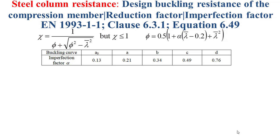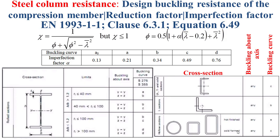The imperfection factor alpha is determined depending on the buckling curve, and the buckling curve is determined using the table shown at the bottom of this slide, depending on the cross-section, the dimensional limits, and the buckling axis. After determining the imperfection factor alpha, we then determine the slenderness lambda-bar in order to determine phi and finally the reduction factor chi.